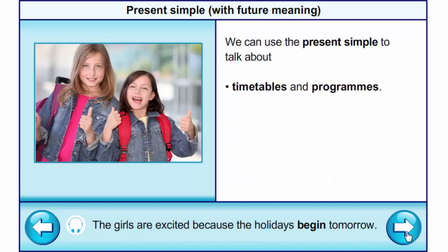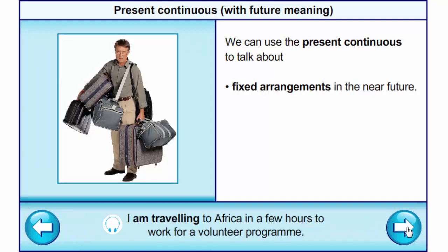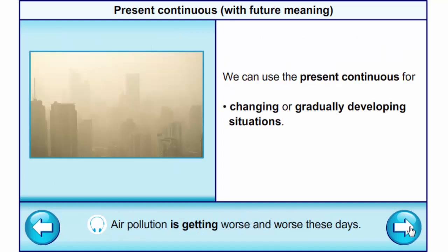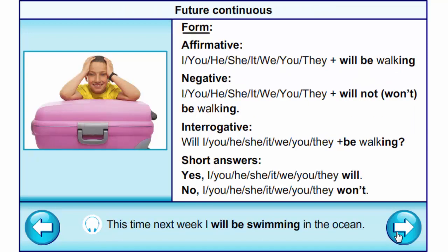When we are talking about timetables and programs, we use present simple. Example: The girls are excited because the holidays begin tomorrow. We can use the present continuous to talk about fixed arrangements in the near future. Example: I am travelling to Africa in a few hours to work for a volunteer programme. We also use it for changing or gradually developing situations. Example: Air pollution is getting worse and worse these days.